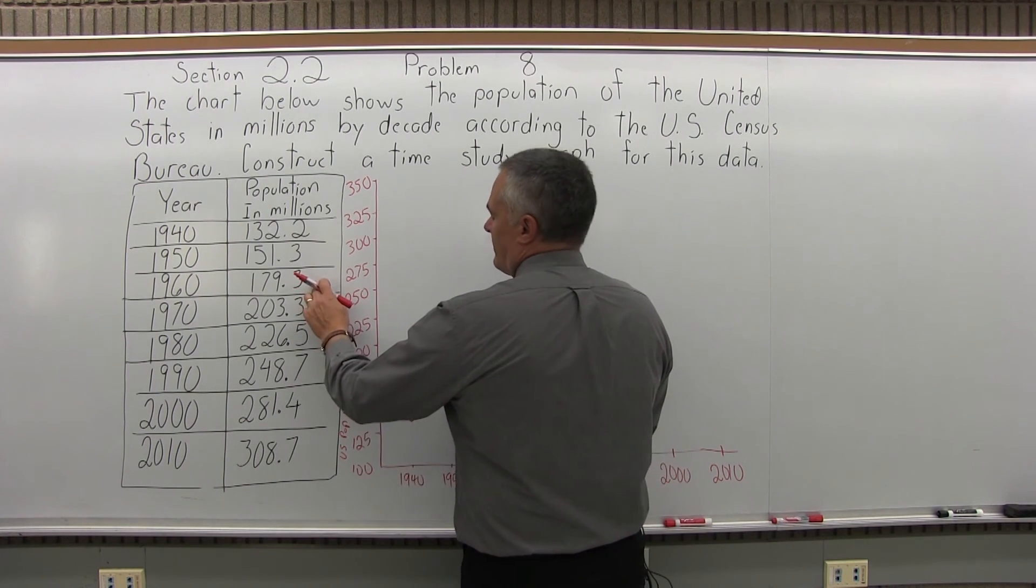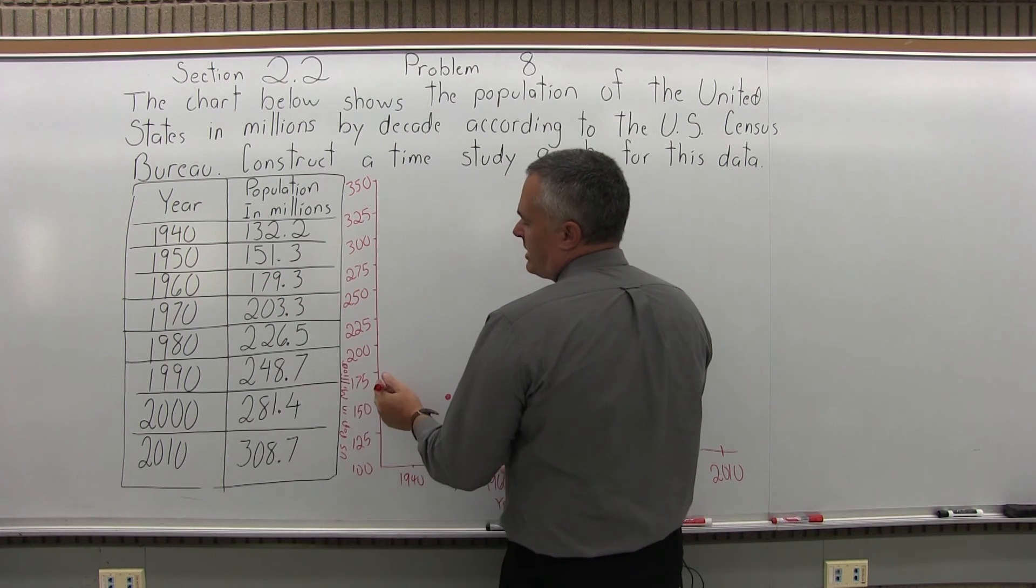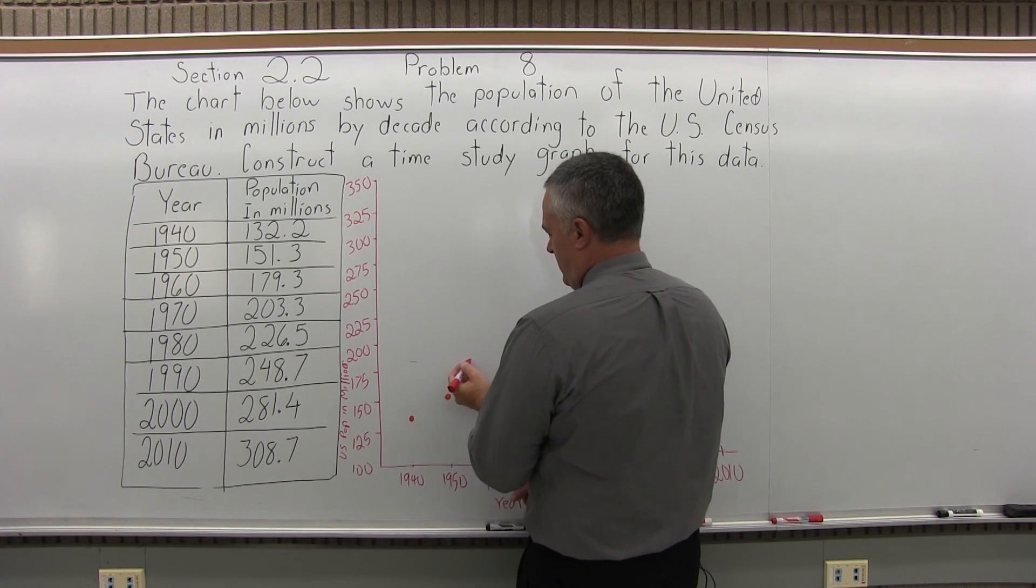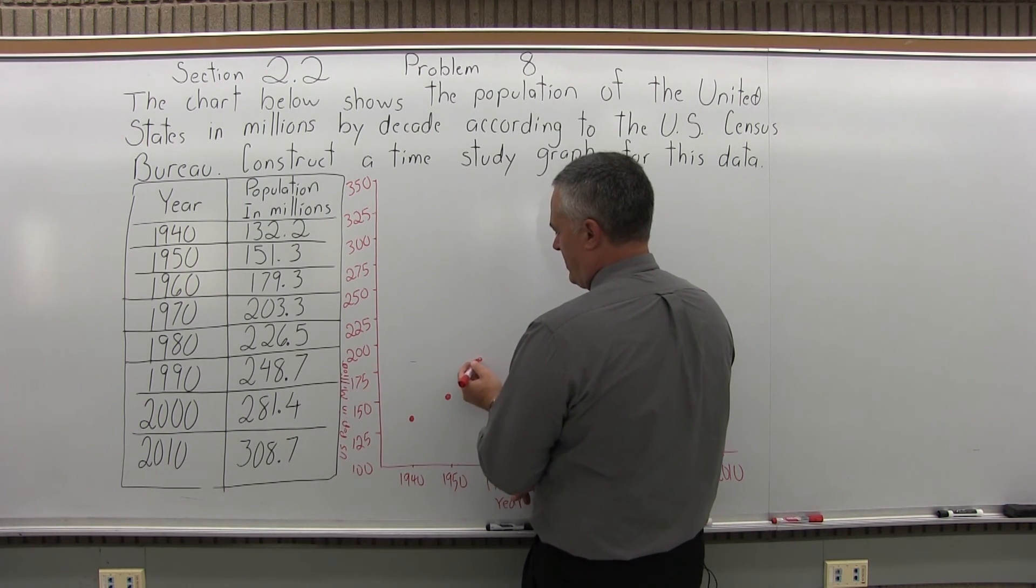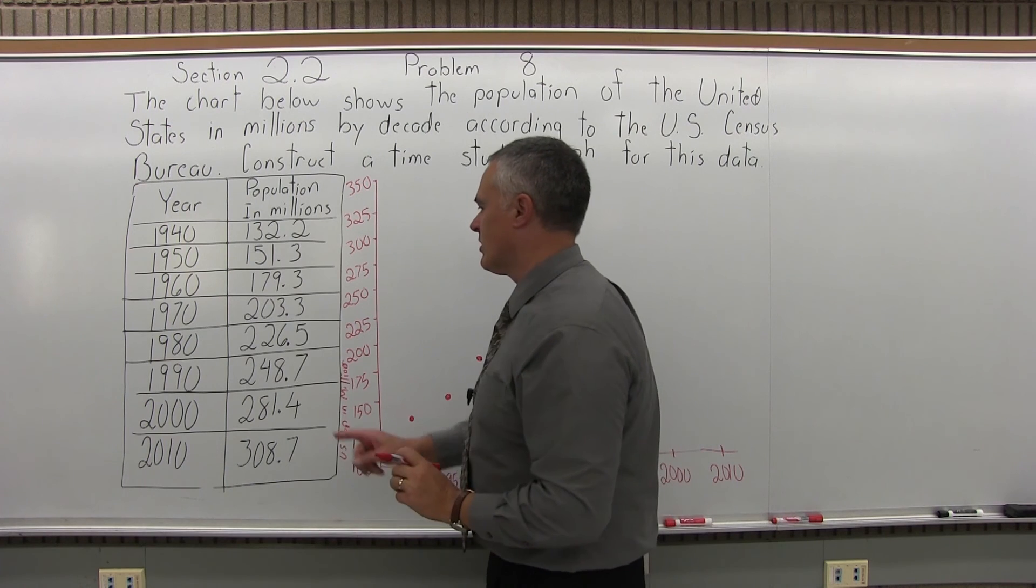And then for 1960, it will be about 180 million by eye, so it's 175, 180 would be maybe right about there. And again, it's not actually 180, but by eye on a freehand graph, that would look about right.